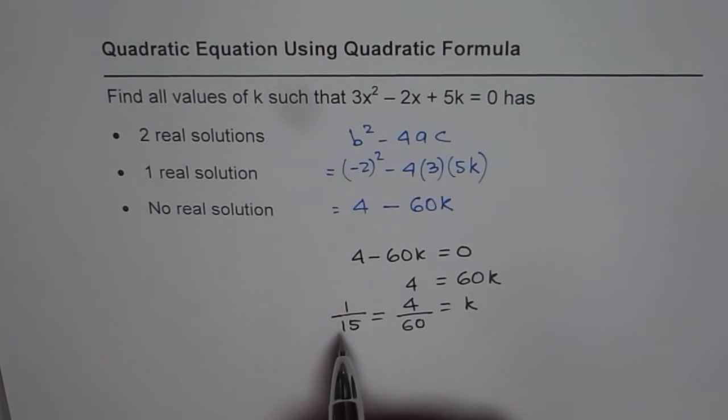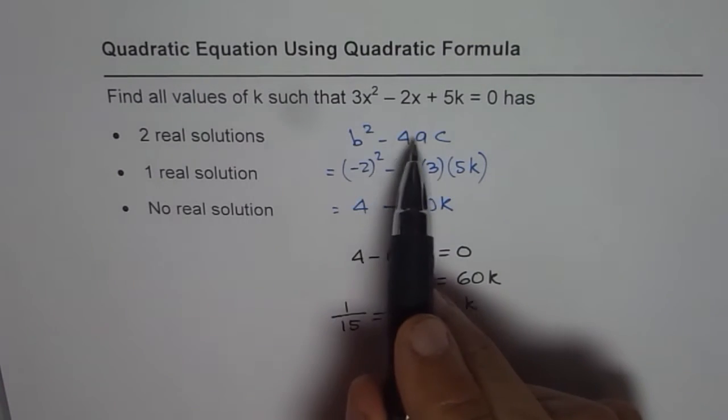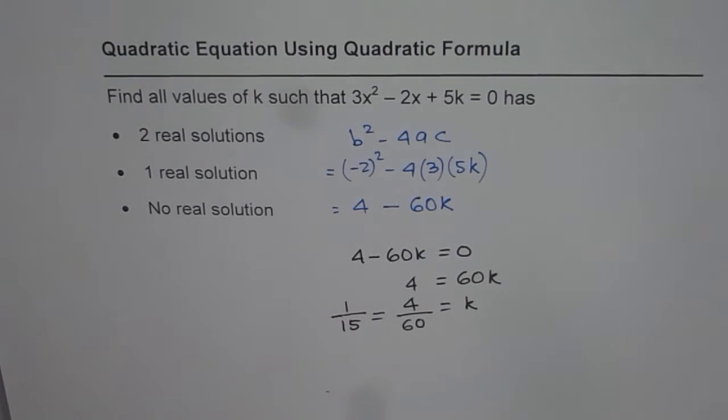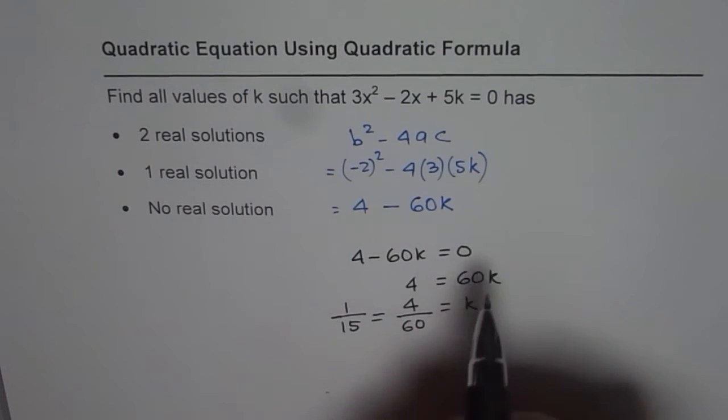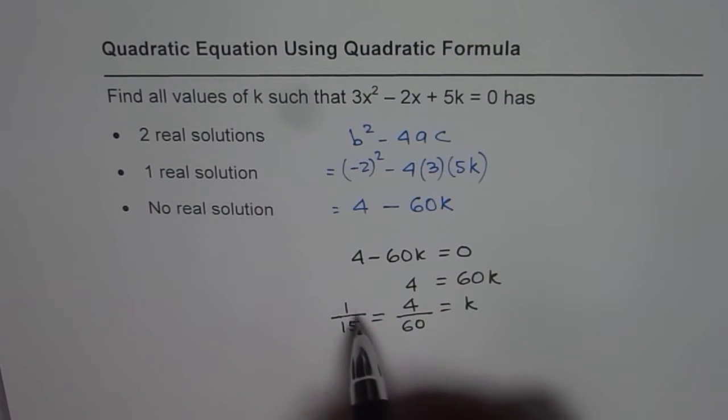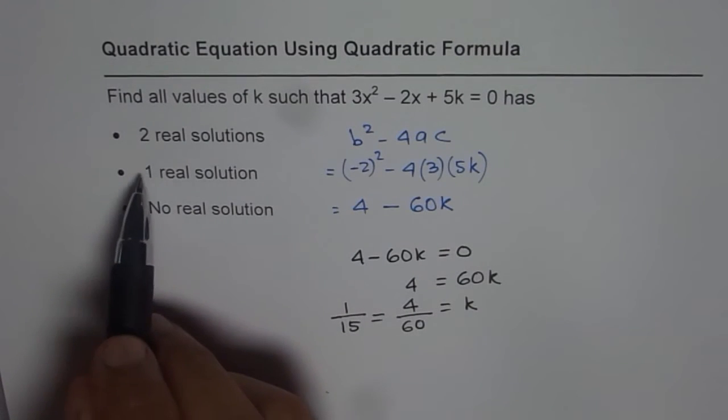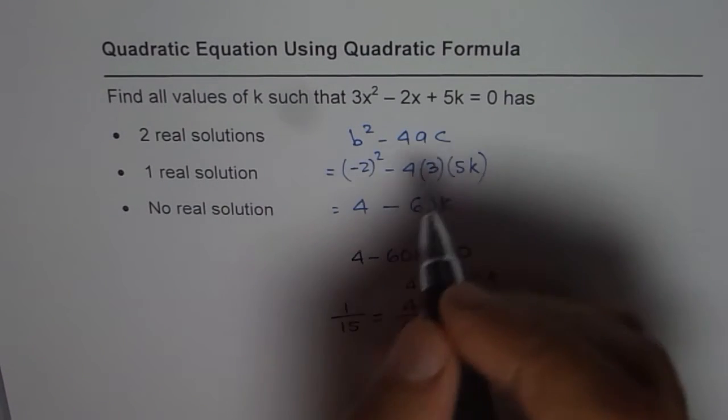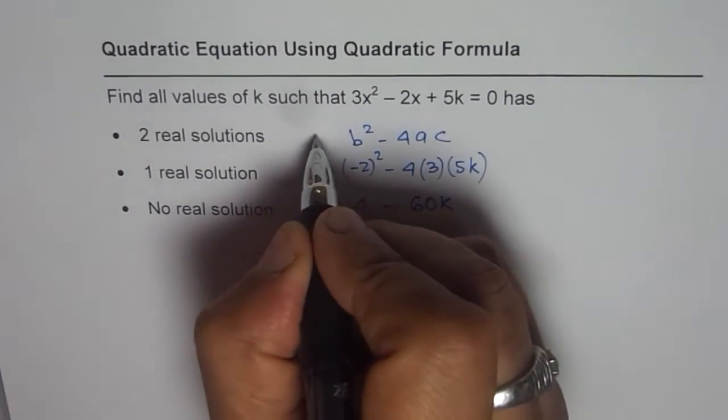So if k = 1/15, then b² - 4ac is 0. That is what it is. So for k = 1/15, we have 1 solution. So let me call this as discriminant.